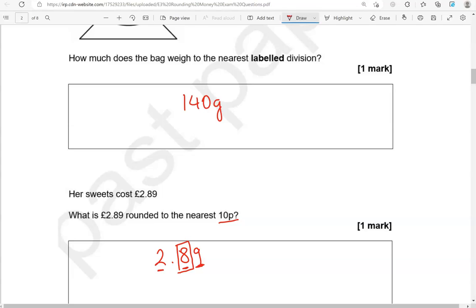So if it's 5, 6, 7, 8 or 9, we're going to round up, meaning this will go up by 1. So £2.90, as it's money, this will be £2.90.